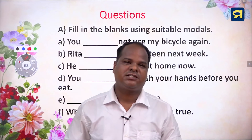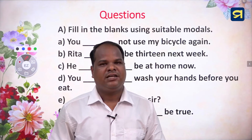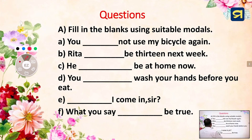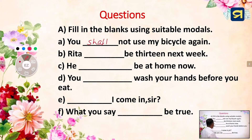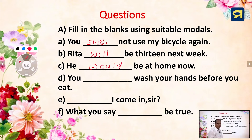Dear children, today we have discussed about the modals: will, would, shall, should, and may, might. Let's discuss some questions regarding the use of these modals. Fill in the blanks using suitable modals. A: 'You dash not use my bicycle again.' Right answer: shall. Next question: 'Rita dash be 13 next week.' Right answer: will. 'He dash be at home now.' Right answer: would. Again, 'You dash wash your hands before you eat.' Right answer: should.